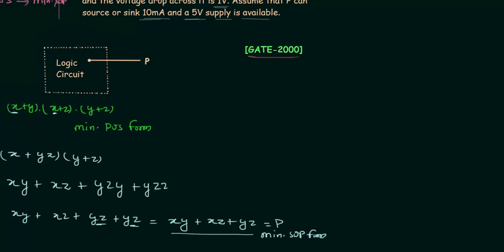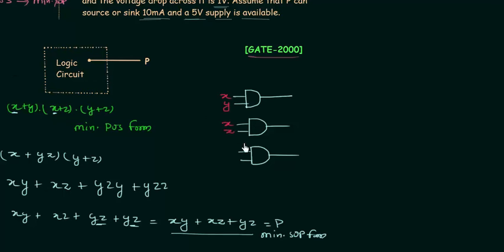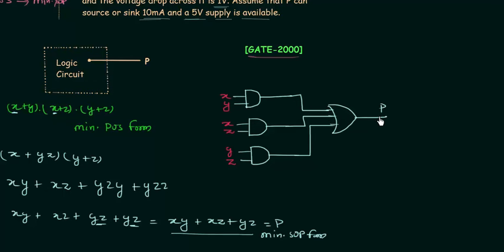I will first implement the circuit. Three AND gates are required: the first AND gate has inputs x and y, the second has inputs x and z, and the third has inputs y and z. Their outputs feed into a three-input OR gate whose output is P = xy + xz + yz. When P equals 0 we have 0 volts at this point, and when P equals 1 we have 5 volts.